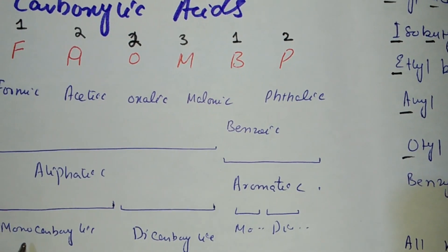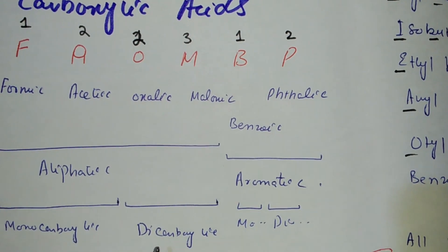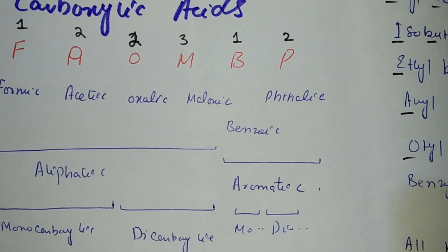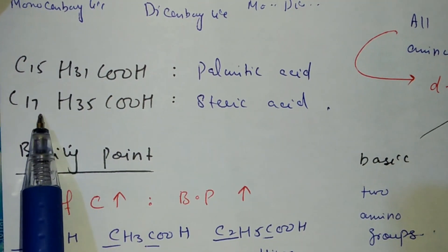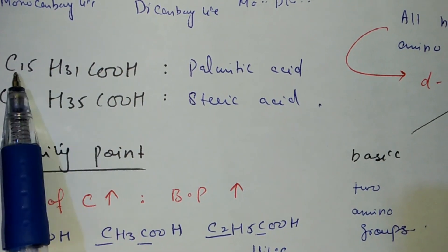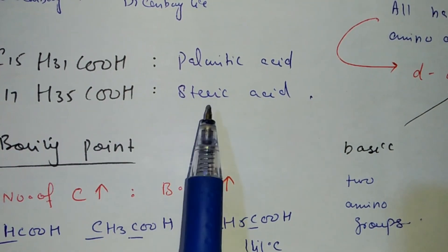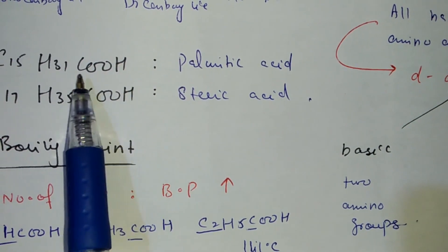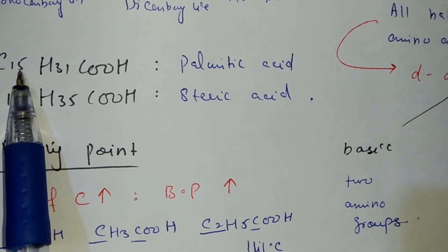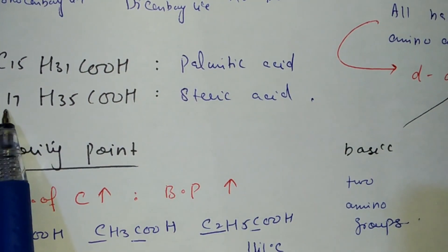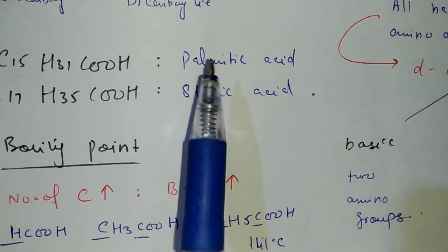Monocarboxylic Acid has one carboxyl group, COOH, and Dicarboxylic has two. For long-chain acids, 15-carbon is Palmitic Acid and 17-carbon is Stearic Acid. To remember: 15 P for Palmitic, 17 S for Stearic.